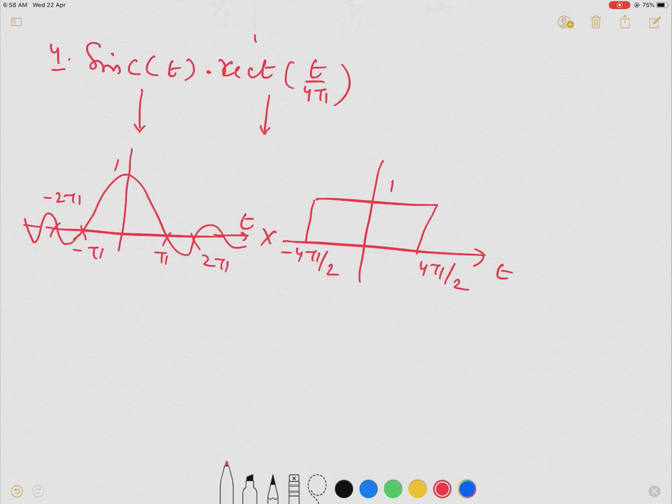Now we need to multiply these two signals. Okay, and this is nothing but it is here, minus 2 pi by 2 pi by 2 pi. And this signal, now we need to multiply. So these are the ranges in which we have to multiply.